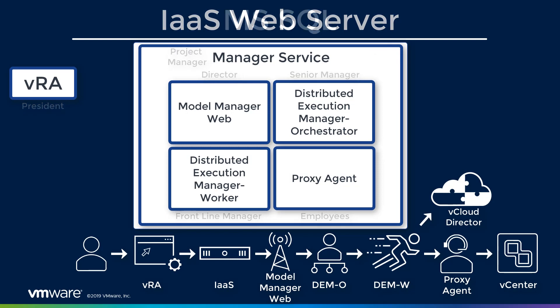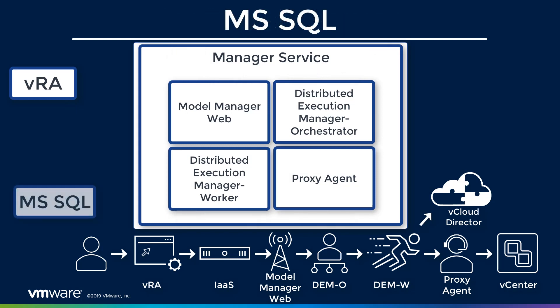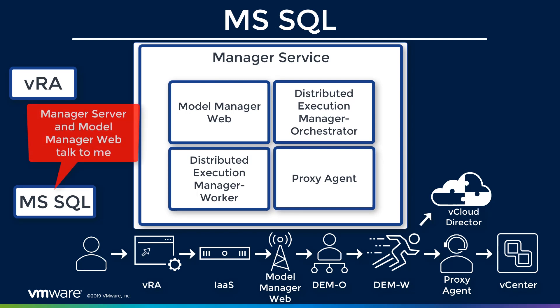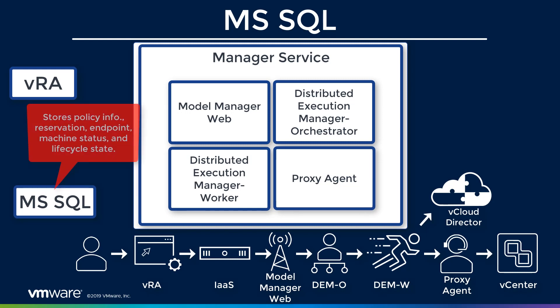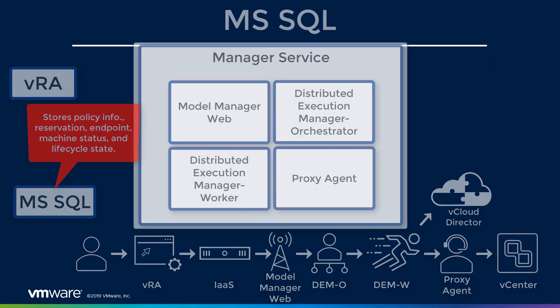Which brings us to our last piece: our SQL server. This can be installed on our IaaS web server or on a separate box. Our manager server and our Model Manager Web both communicate with our SQL server. Our SQL server maintains information about our machines — for example, policy information, reservations, endpoint data, machine status, or lifecycle state.